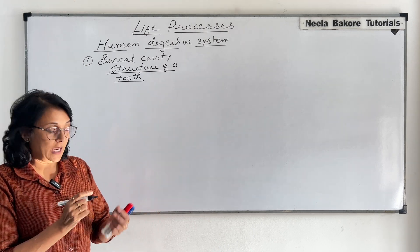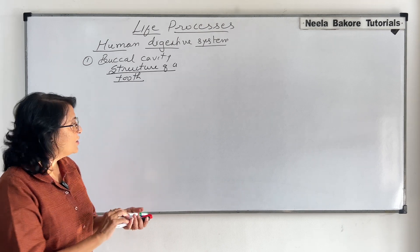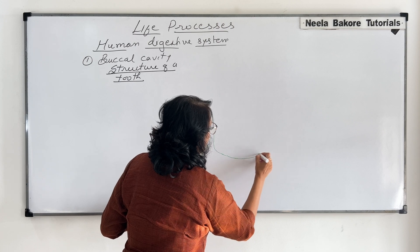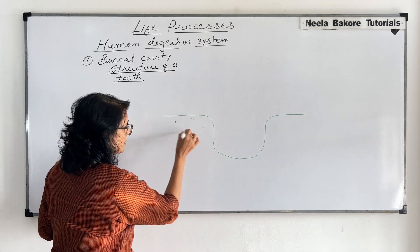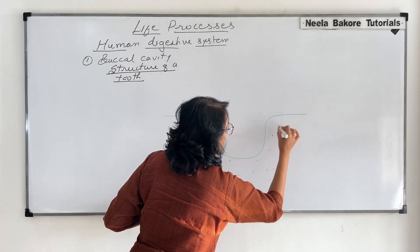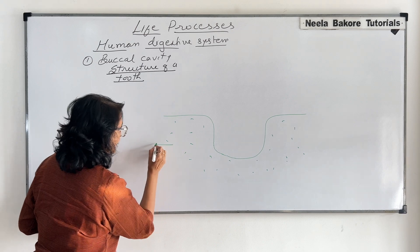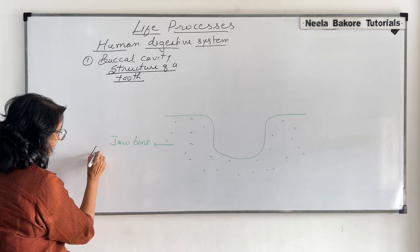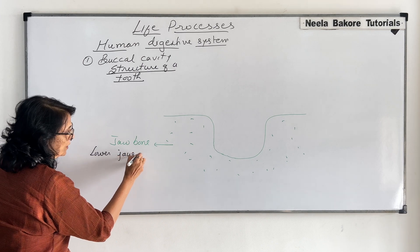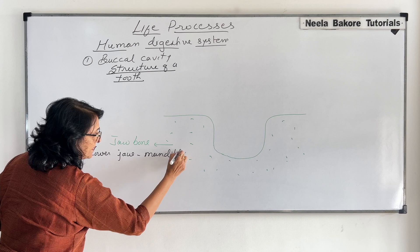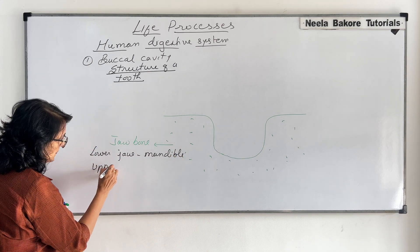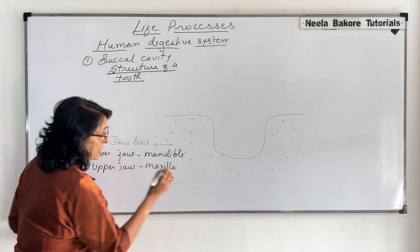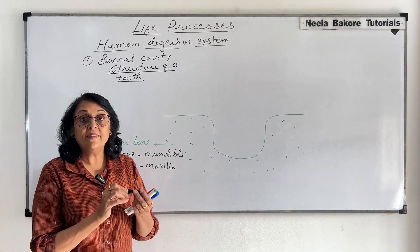There are depressions in our jawbones in which these teeth are fitted. So let us say this is our jawbone and there is this depression. This structure is our lower jaw or it can be upper jaw. If it is lower jaw, then the bone is known as mandible. And if it is upper jaw, then there are two bones and they are known as maxilla. There are these depressions in our jawbones in which our tooth is fitted.